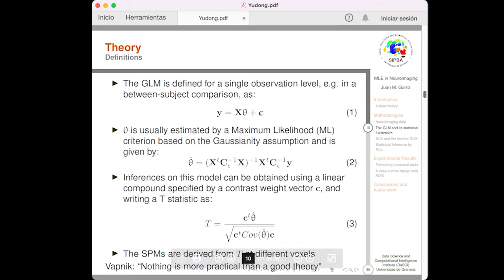Well, let's start with the theory. The GLM, the general linear model, is defined as a simple equation, equation 1, in which we relate the observation, the vector of observations, with experimental conditions defined in the design matrix X. And the goal is to evaluate, to estimate theta. Theta is a set of parameters that better explains y. Epsilon is assumed to be Gaussian distributed. Theta is usually estimated by a maximum likelihood criterion based on the Gaussian assumption and is given classically by this equation 2. Inferences of this model can be obtained using a linear compound specified by a contrast weight vector C and writing a T statistic as equation 3. Well, the vector C selects some of the components in theta for comparison purposes.